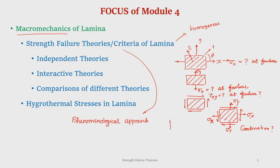What we will do is take a lamina, load it in a UTM, look at the stress-strain curve, and observe that it fails at a certain point — this is the failure point. This stress is the failure stress, or this is the strength of that particular lamina. Now, how this failure has taken place, we are not going into the mechanisms.